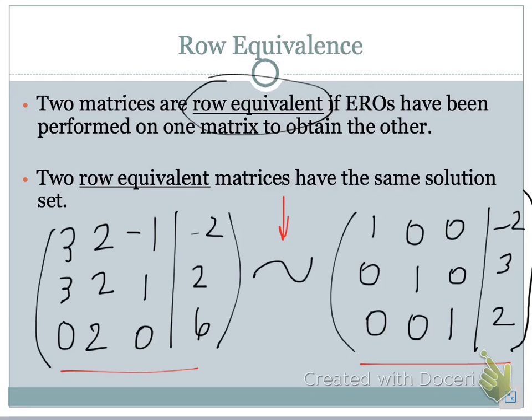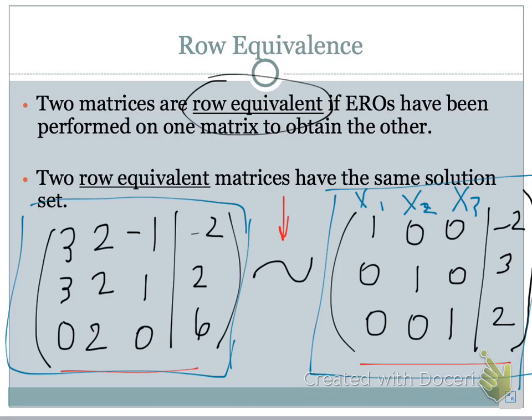Remember that we got this matrix from a system of equations. We can now write, since these are row equivalent, this matrix as a system of equations. We notice that this column represents x1, this column represents x2, and this column represents x3. So, if we were to write this, we notice that here x1 plus 0x2 plus 0x3, we would have x1 is equal to negative 2. Likewise, we'll have x2 is equal to 3, and we'll have x3 is equal to 2. And so, we notice that if we can get our original matrix simplified by using EROs to a form that looks like this here, then we can easily solve this system.